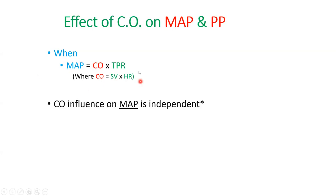Cardiac output's effect on mean arterial pressure is independent. This basically means: if you increase cardiac output while keeping TPR constant, you increase mean arterial pressure. Don't be confused by the exercise example where we were increasing cardiac output and decreasing TPR. Here we are keeping TPR constant and only increasing cardiac output, so naturally mean arterial pressure goes up.